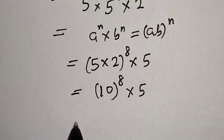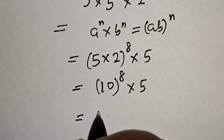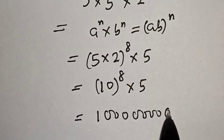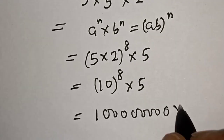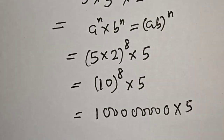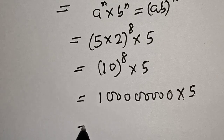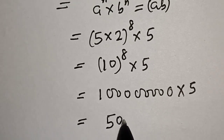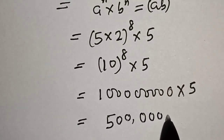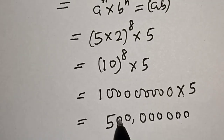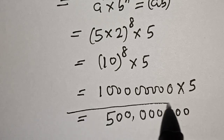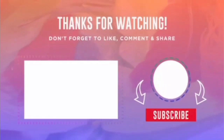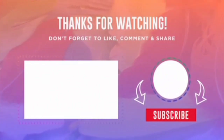10 raised to power 8 is equal to 1,000,000,000 (one billion). Multiplying by 5, we get 5,000,000,000 as our final answer. If you enjoyed the class, please don't forget to like, share, comment, and subscribe. Thank you.